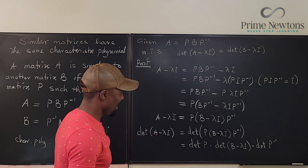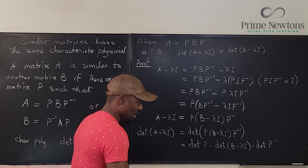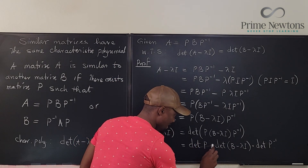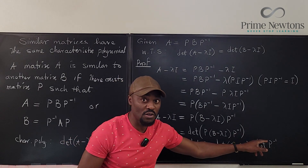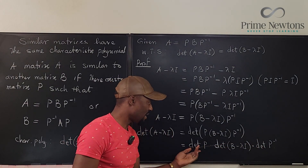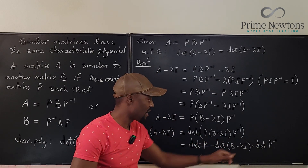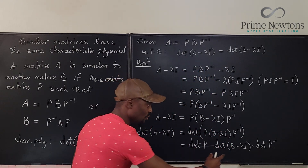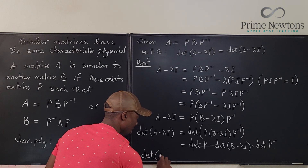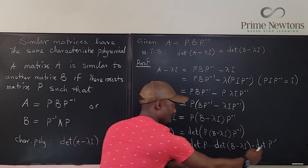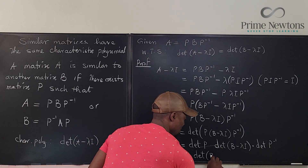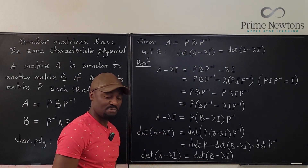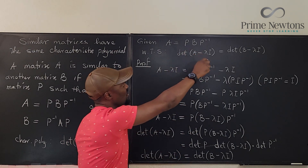Since these are scalars, they can be rearranged. The determinant of P inverse equals one over the determinant of P, so they cancel each other out. What remains is simply: the determinant of A minus lambda I equals the determinant of B minus lambda I. This is the characteristic polynomial of A on the left and of B on the right — since they're equal, our statement is justified.